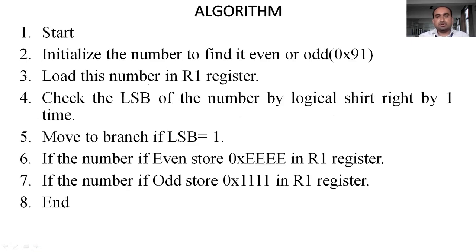The algorithm is very simple. First, we start the program and initialize the number — we are considering hexadecimal number 0x91 — and we need to find out whether this number is even or odd. The number 91 is loaded to the R1 register. Next, we check the LSB of this number 91 and perform a logical right shift by one time. When we perform this logical right shift one time, whatever the LSB that is in the number will be moved to the carry flag.